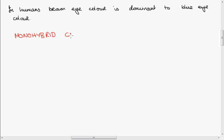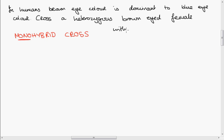Monohybrid cross means we are only looking at one characteristic, mono, one. So in humans, brown eye colour is dominant to blue eye colour. So let's do a cross then. We'll cross a heterozygous brown-eyed female with a blue-eyed male.